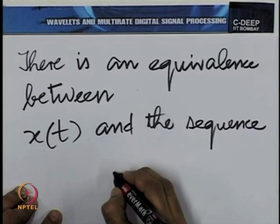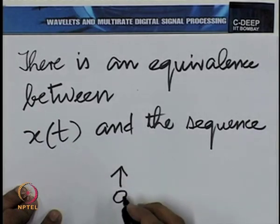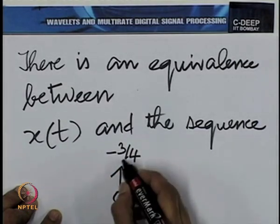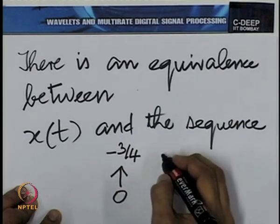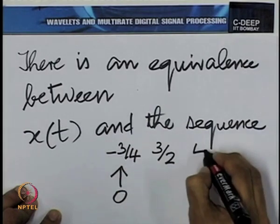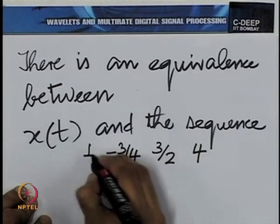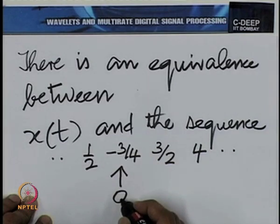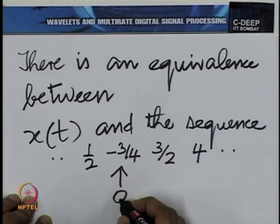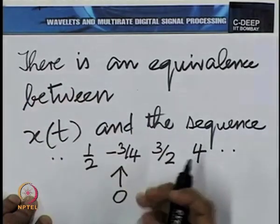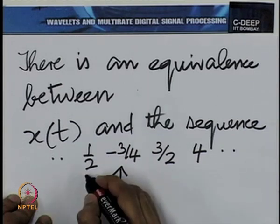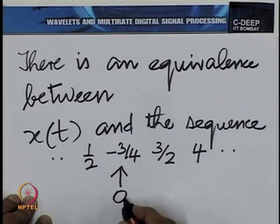Just to recapitulate the notation for a sequence: we write the 0-point and mark an arrow to show that this is the sample at n = 0, and then of course you have 3/2 at 1, 4 at 2, 1/2 at −1 and so on. So when we write a sequence in this notation, what we mean is that this is the sample at n = 0 and the other samples are arranged in the right order around the marked sample.